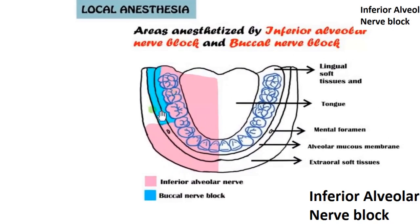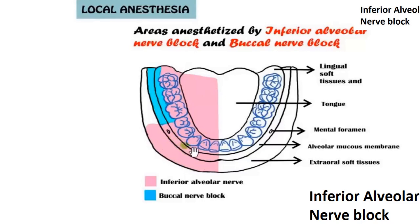This shows the areas anesthetized by the inferior alveolar nerve block, including the buccal nerve. The inferior alveolar nerve (shown in pink) covers the mandible, inferior portion of the ramus, teeth from the third molar to the center, and the anterior two-thirds of the tongue and floor of the oral cavity. The area innervated by the lingual nerve includes the lingual soft tissues and alveolar mucous membrane. For procedures requiring extraction of the molar teeth, the buccal nerve block must also be given.